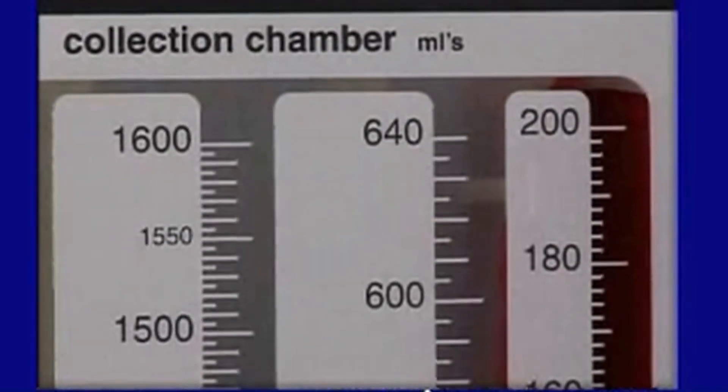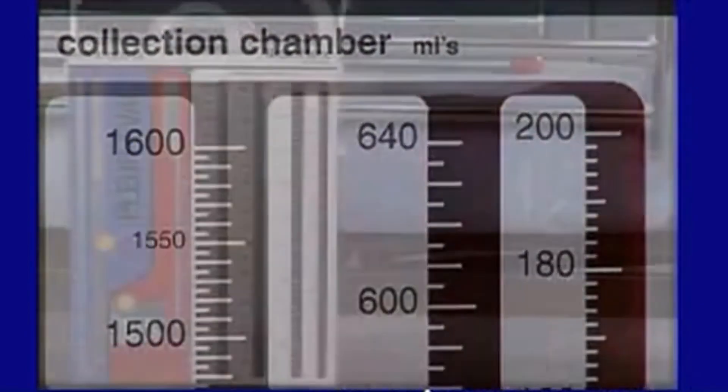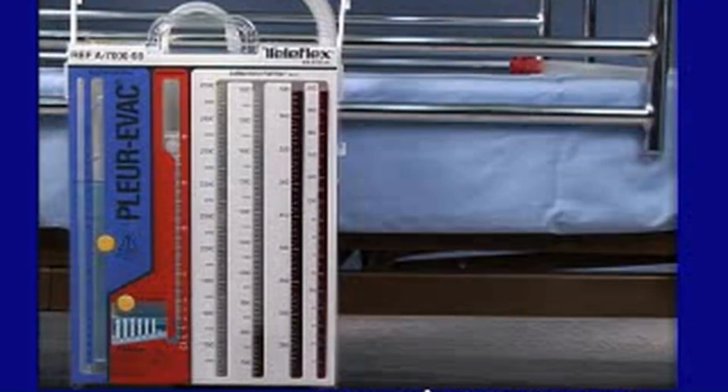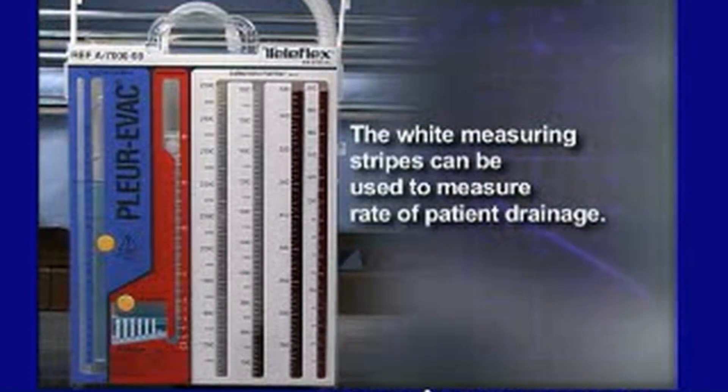Fluids fill the first column and then spill over into the second. After the second column fills, the fluid spills over into the third, and subsequently to the fourth. The white measuring stripes can be used to record the rate of patient drainage.